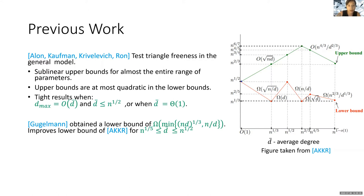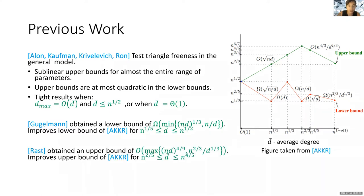Goldmann obtained better lower bounds for the range in which the average degree is between n^{1/5} and n^{1/2}. And RAS obtained better upper bounds in the case that the average degree is between n^{2/5} and n^{4/5}.